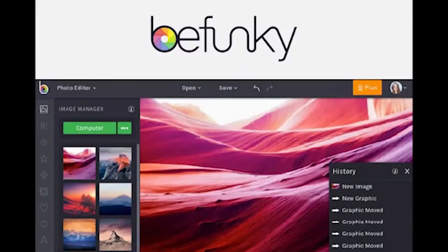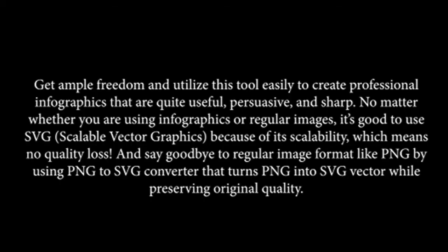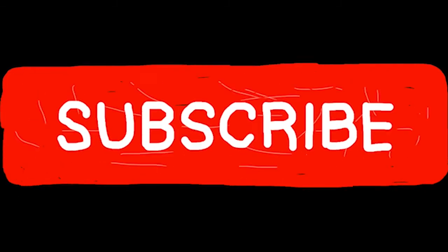Befunky. Befunky comes with the best infographic building tool that allows you to work with knowledge visualization. This tool is packed with innumerable templates and customization options, including stock images for free. Get ample freedom and utilize this tool easily to create professional infographics that are quite useful, persuasive, and sharp. No matter whether you are using infographics or regular images, it's good to use SVG — scalable vector graphics — because of its scalability, which means no quality loss. Say goodbye to regular image formats like PNG by using a PNG to SVG converter that turns PNG into SVG vector while preserving original quality.